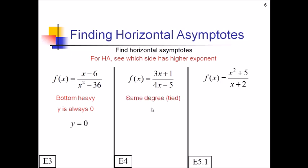What if we have the same degree? In this case, as you plug in bigger and bigger x values, these other terms aren't really going to matter as much. If this was three billion and four billion down here, it doesn't really matter if you have a plus one or minus five — you're really just looking at those billions places. So in this case, all you do is take the ratio of your lead coefficients. If this is basically three billion and one over four billion minus five, the number that this is approaching is essentially three over four. Bottom-heavy is always zero; same degree depends on your coefficients.